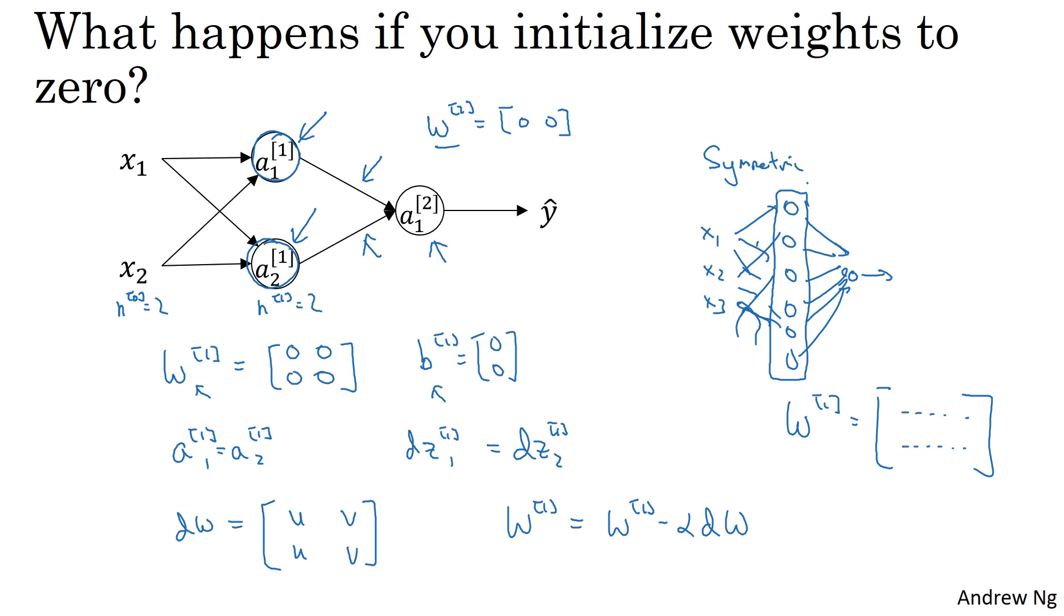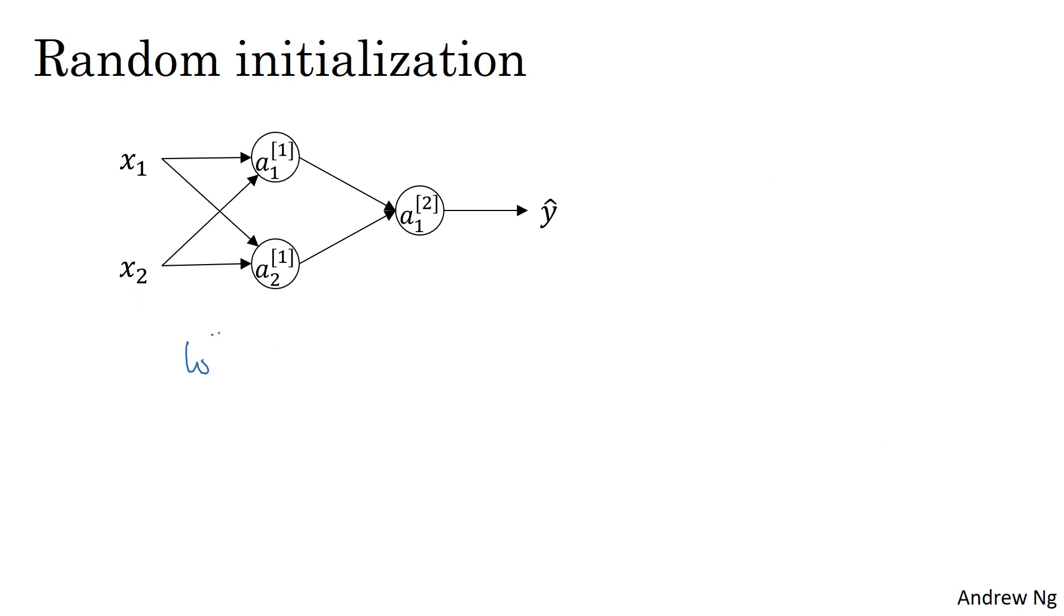The solution to this is to initialize your parameters randomly. So here's what you do. You can set w1 equals np.random, this generates a Gaussian random variable, 2, 2. And then usually, you multiply this by a very small number, such as 0.01. So you initialize it to very small random values.